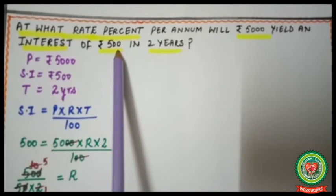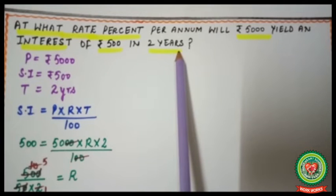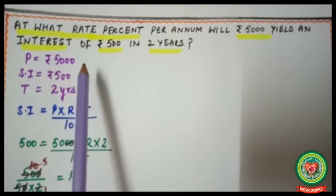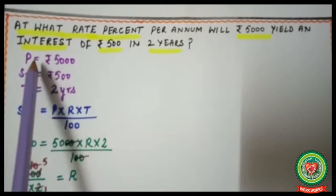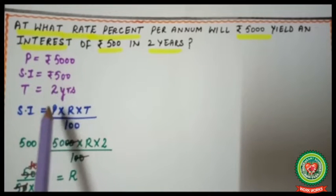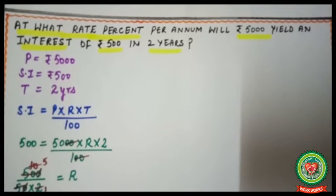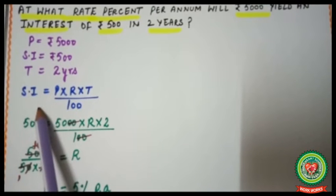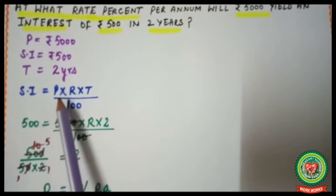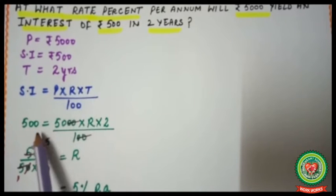Two years means time is given. So from the statement: principal P = 5000, SI = 500, and time T = 2 years. Now we will apply the formula for SI, which is SI = P × R × T / 100.